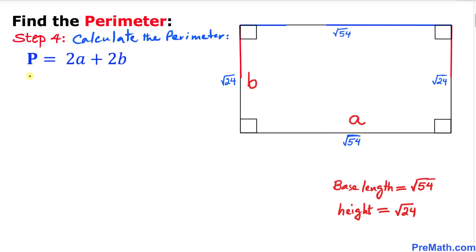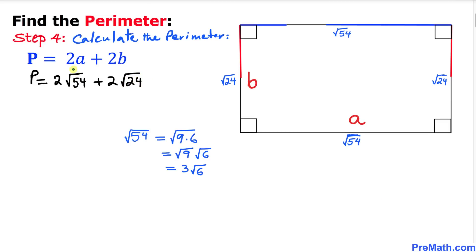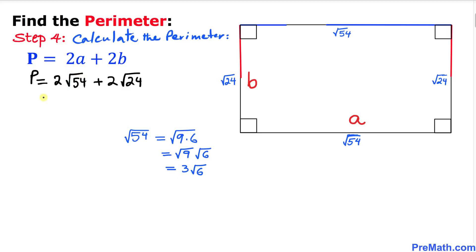Filling in the formula: perimeter equals 2 times square root of 54 plus 2 times square root of 24. Let's focus on simplifying square root of 54 first. After simplifying, square root of 54 equals 3 times square root of 6, so we can write it as 3 root 6.